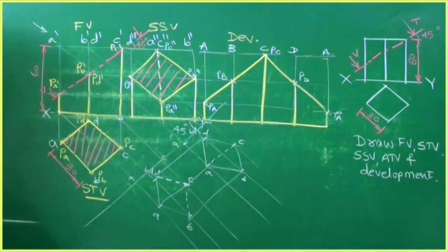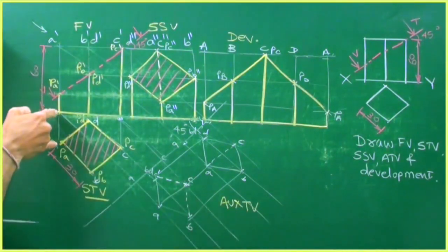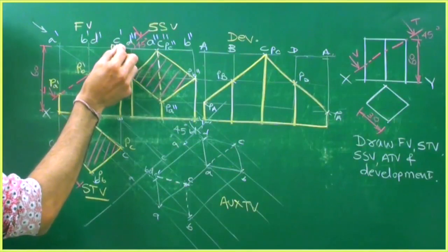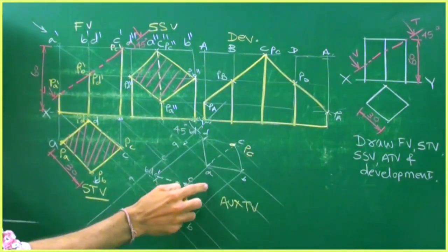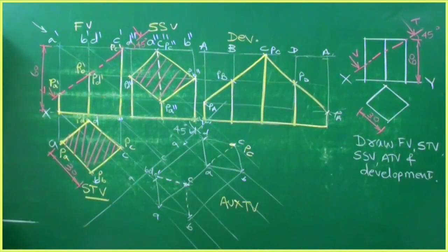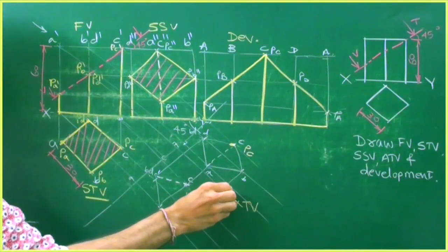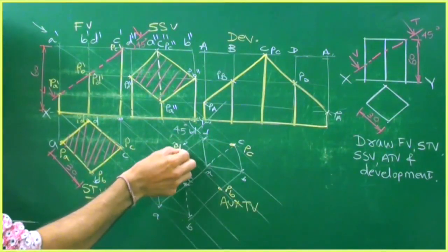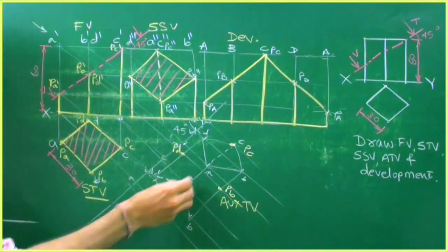This is the development of the remaining solid. Now we will draw the auxiliary top view, which is next to the top view. What we are transferring is the width. Take Pc dash — wherever it cuts is point Pc. It is always advisable to draw the main solid first, then take the cut points. Extend D and B — wherever it cuts on B is Pb, wherever it cuts on D is Pd. Extend Pa dash — wherever it cuts on A is Pa.